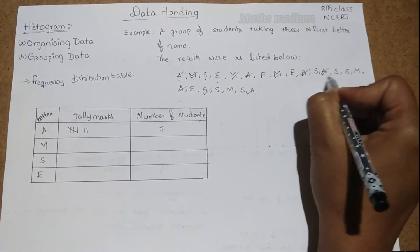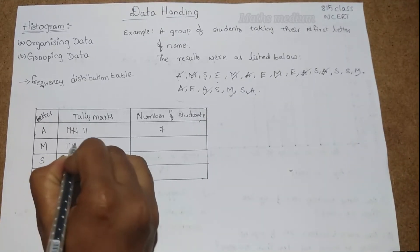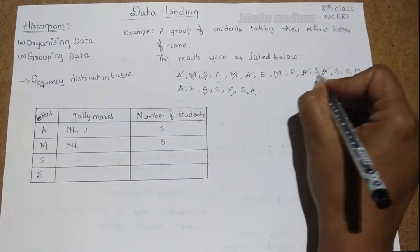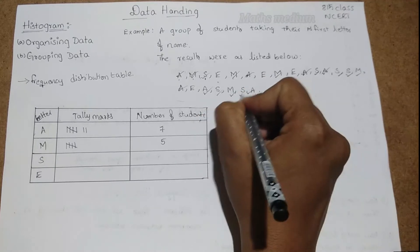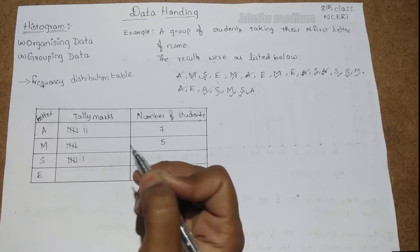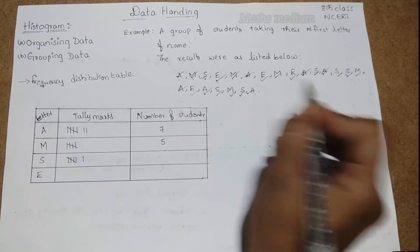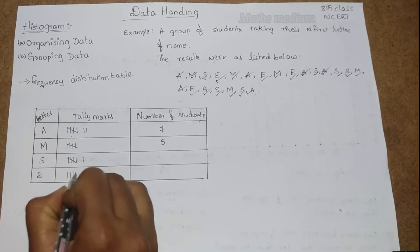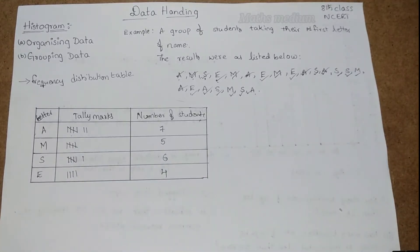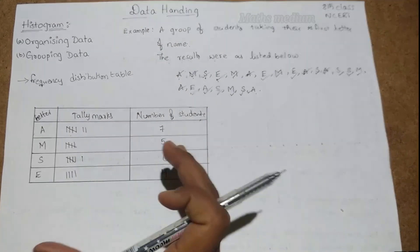For M: one, two, three, four, five — so five students. For S: one, two, three, four, five, six — so six students. For E: one, two, three, four — so four students. Now by observing this frequency distribution table we can answer any question based on this data.